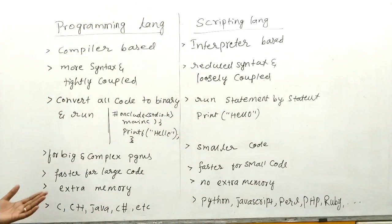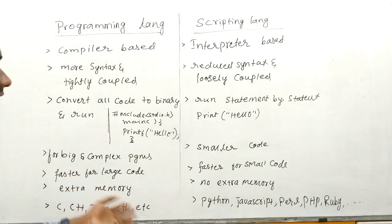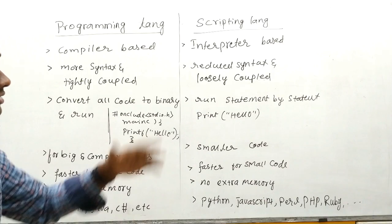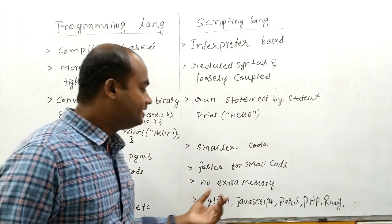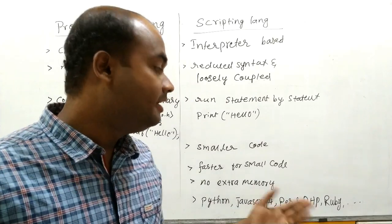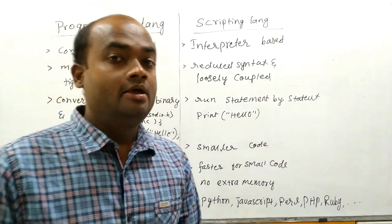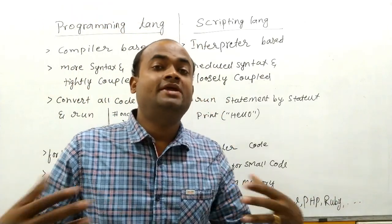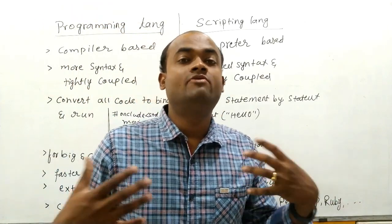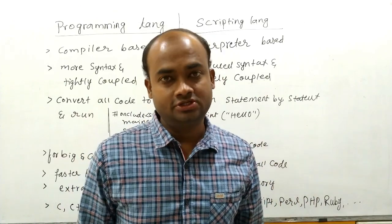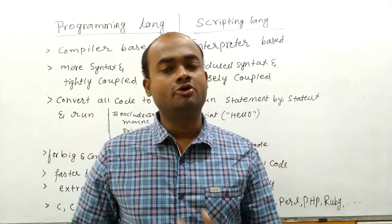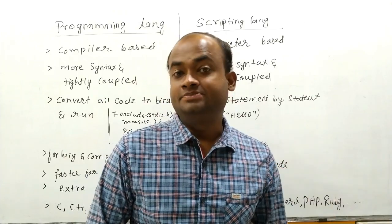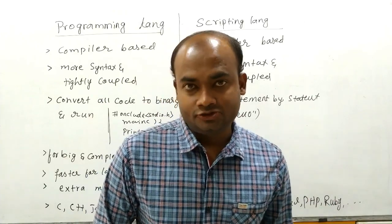Examples of programming languages include C, C++, Java, and C#. Examples of scripting languages include Python, JavaScript, PHP, and Ruby. Depending upon your application, its complexity, and the level of interactivity required, you can choose either programming languages or scripting languages. Thank you.